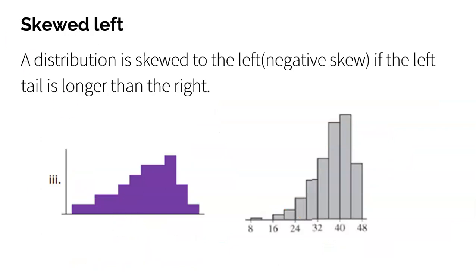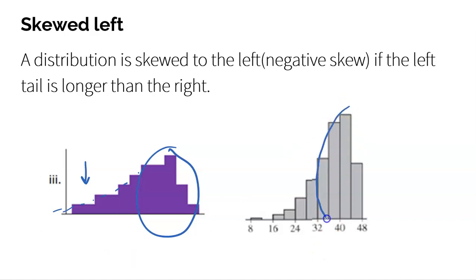Then of course we have skewed left, which is the exact same thing but in the opposite direction. The majority of our data is towards the higher values, and as we move to the lower values, our data becomes less and less — the tail of the dinosaur is on the left, so skewed to the left. For example, the majority of data falls around 35 to 40, towards the higher numbers, and there is some data towards the lower values, but it's just less and less. My data ranges from eight to 48, but the majority is towards the higher numbers — that's where we get the skewed left idea.